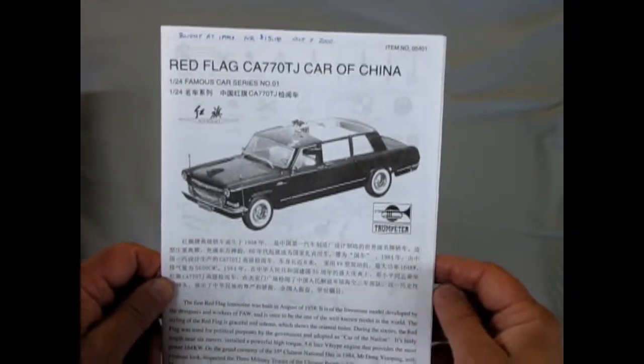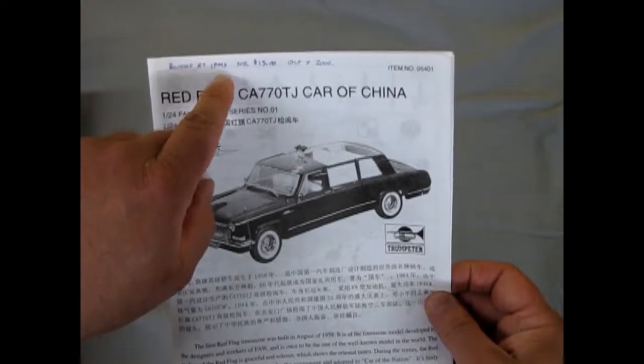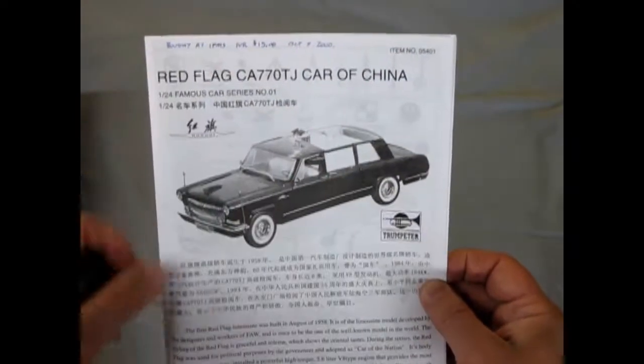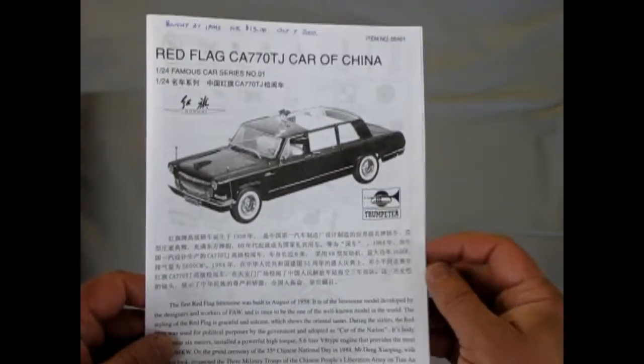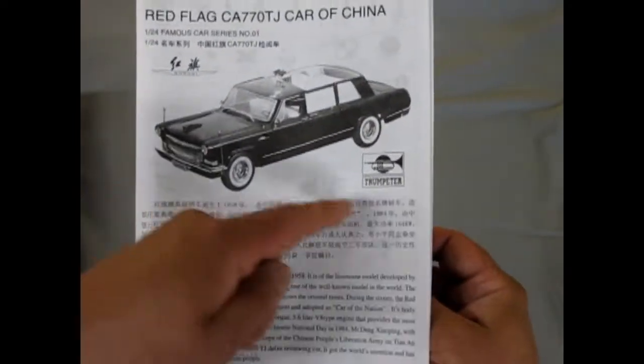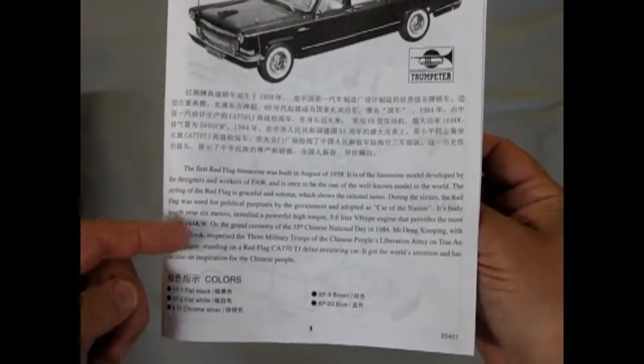When you buy one of these, it will not be half worked on, so don't worry. I bought this at the IPMS, which is a model show, for $15 on October 7, 2000, so over 18 years ago. It's got Chinese writing in there because Trumpeter is a Chinese company. And then underneath we have English.